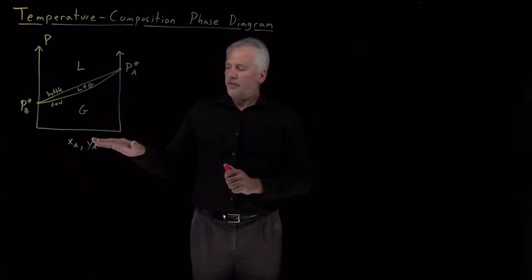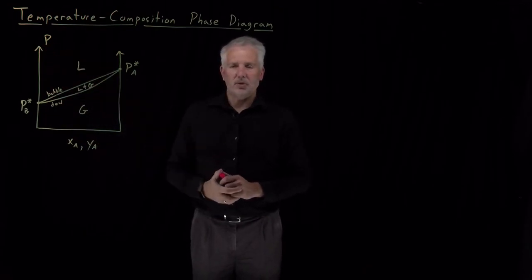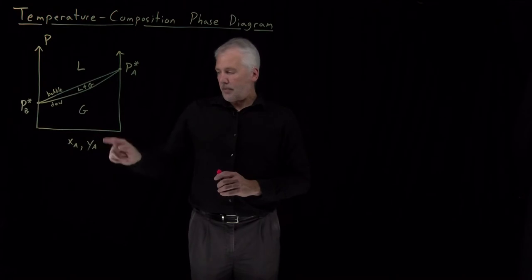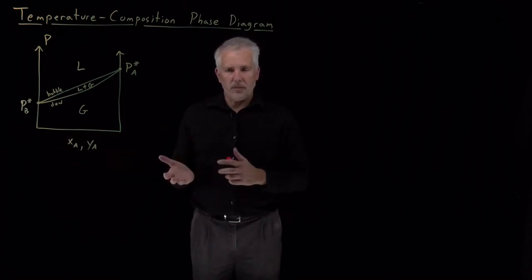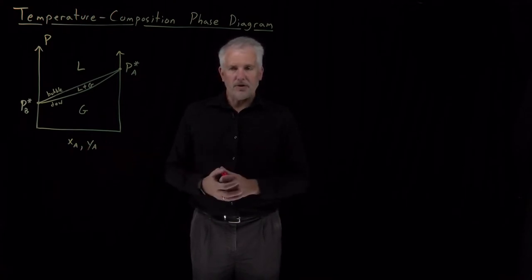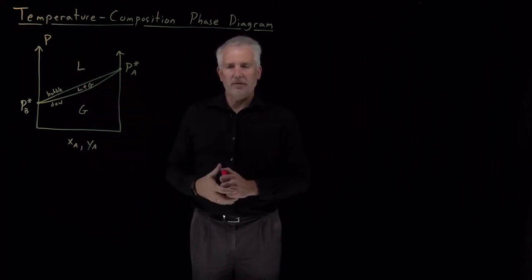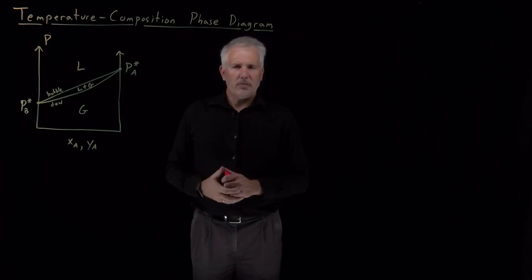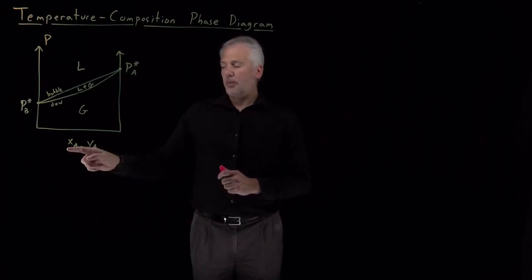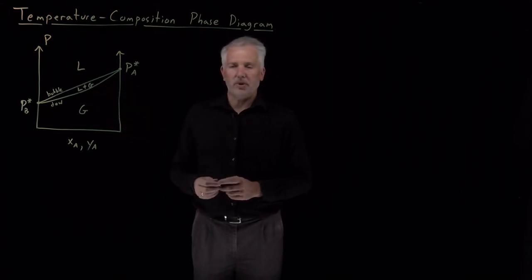Now I want to talk about a different axis: the temperature-composition phase diagram. Pressure is actually not the most convenient axis to use. If I say prepare a solution that's 40-60 ethanol-methanol as a mole fraction, that's easy enough. But if I say do it under conditions where it generates a vapor pressure above the liquid of 70 torr, that's hard to engineer. What's much easier would be to say prepare that 60-40 solution at a temperature of 30 degrees Celsius. Temperature is much easier to control than directly controlling the pressure of the system.